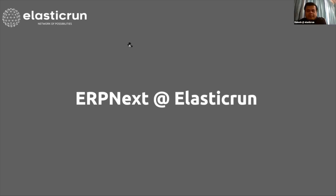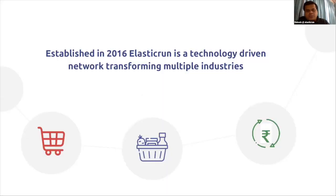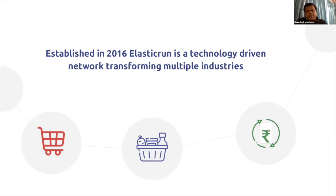Hi everybody, good afternoon. Let me take you through the journey. Elastic Run was established in 2016 and we are a technology-driven network transforming multiple industries. We started with e-commerce, helping our customers connect the last mile delivery and the first mile connect.